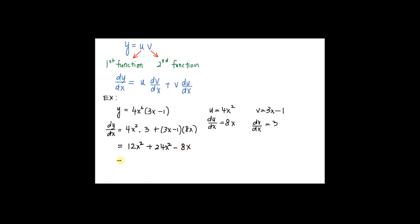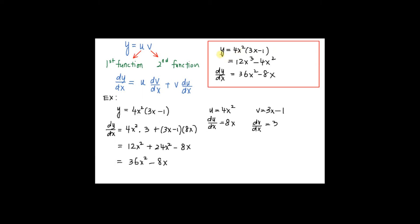By collecting like terms, dy/dx = 12x² + 24x² = 36x² - 8x. That is dy/dx for the product of 4x² times (3x - 1). For information, since y can be easily expanded to become 12x³ - 4x², we now have the difference of two algebraic terms and we can find dy/dx by differentiating every single term. This method is preferred because the working is much easier.